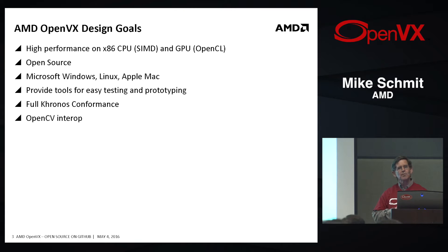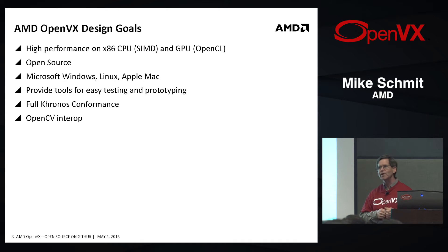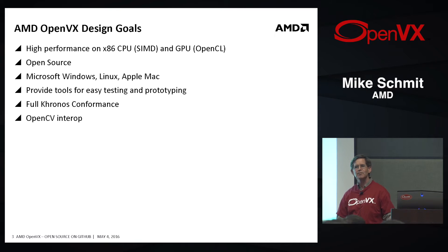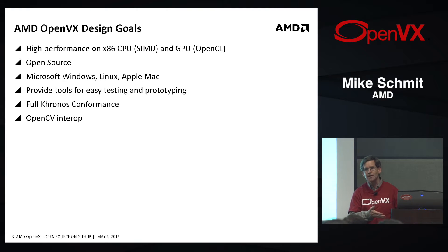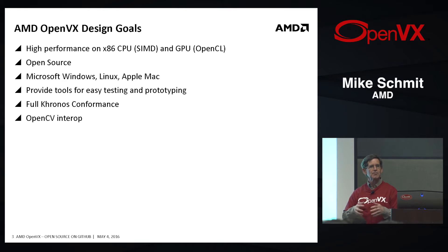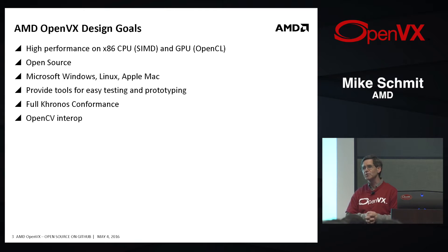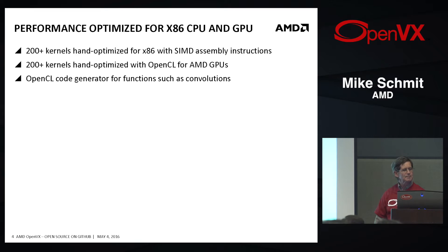We wanted to provide ways to use computer vision in a way that was really easy to prototype and experiment. If you've been here for the conference for three days, everyone's saying they prototype in OpenCV and then go into production and implement some other way. Well, we want to make it so that people can experiment and prototype in OpenVX — that doesn't mean we're excluding OpenCV; we are complementary to it. And of course we want to be fully conformant.